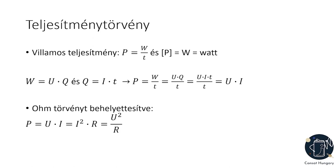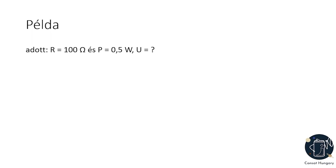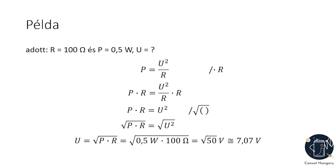Ebből következik, hogyha az adott ellenállásra túl sok feszültség jut, akkor az ellenállás felforrósodik, ami legrosszabb esetben az ellenállás és a környező részek tönkremenetelét is okozhatja. Például, hogyha adott R = 100 Ω ellenállás és P = 0,5 W teljesítmény, akkor mekkora a megengedhető maximális feszültség? Választjuk a P = U² / R formulát, átrendezve: U = √(P · R) = √(0,5 · 100) ≈ 7,07 V.